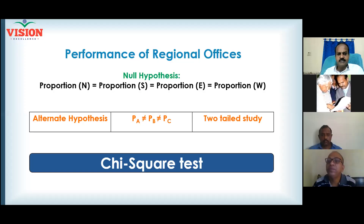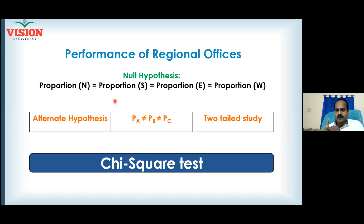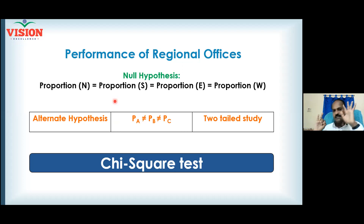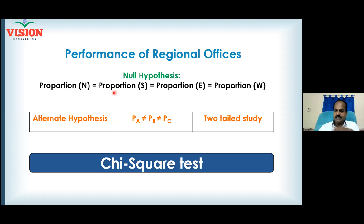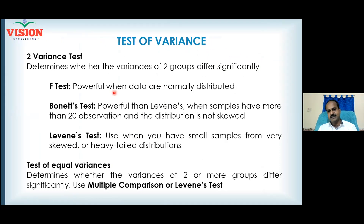We already discussed the chi-square test. By now you should be able to make a wise choice on when to use one-sample z-test, one-sample t-test, two-sample t-test, ANOVA, one-proportion test, two-proportion test, and chi-square. That's seven different hypothesis tests you've understood so far. Now we're moving on to the test of variance.